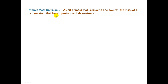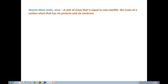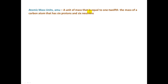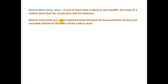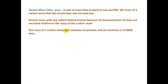How do we determine the mass of these atoms? There's an instrument called a mass spectrometer that helps us determine the mass of small particles like atoms. We measure the mass of atoms in atomic mass units. An atomic mass unit is a unit of mass equal to 1/12th the mass of a carbon atom that has 6 protons and 6 neutrons. Atomic mass units are relative masses because all measurements are recorded relative to that carbon atom. The mass of that carbon atom is 12 atomic mass units. AMU is the abbreviation for atomic mass units.